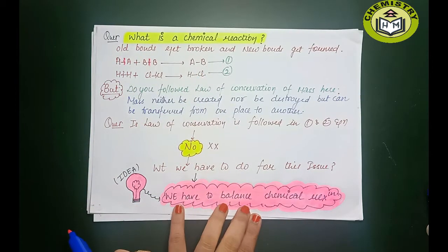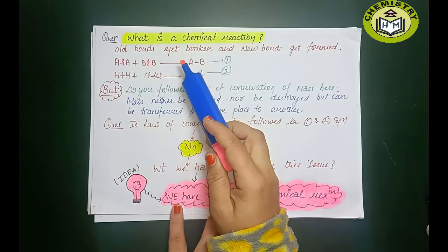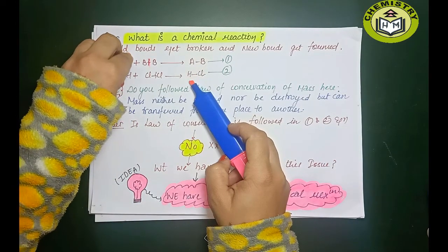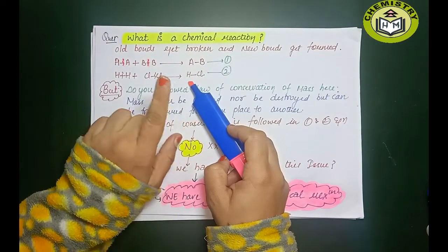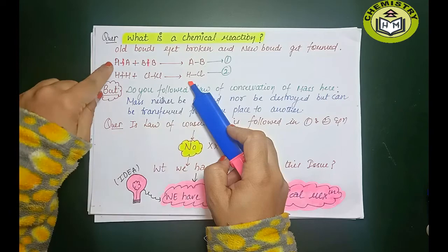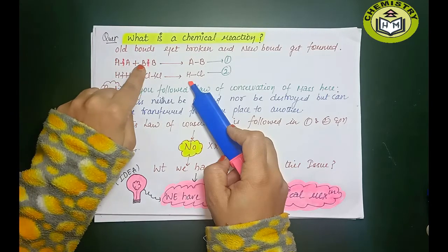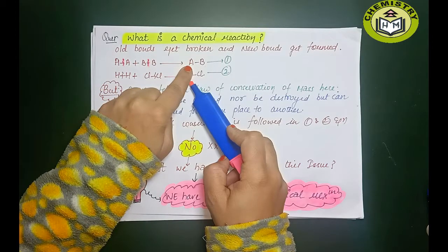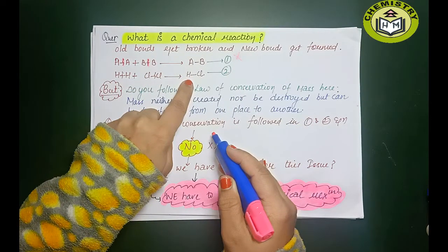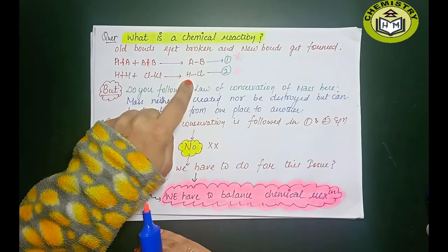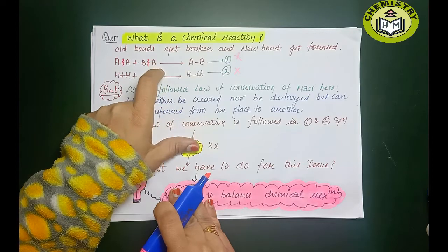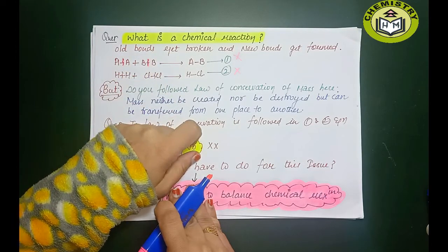Now, have we followed the law of conservation of mass here? The law of conservation of mass says mass of reactants must equal mass of products — mass can neither be created nor destroyed, but it can be converted from one form to another. Looking at the reactions I wrote, I only put one each of H and Cl, but there should be two — so I have not followed the law of conservation of mass.